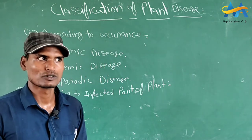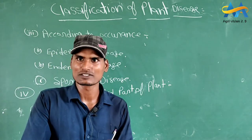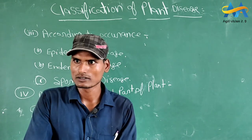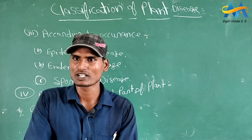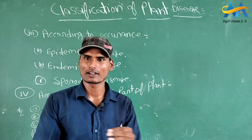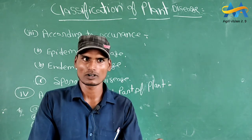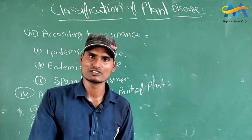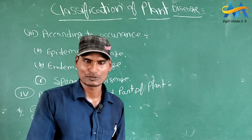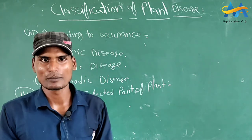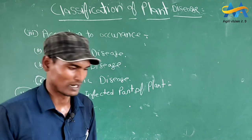And next is sporadic disease - जब किसी फसल पे थोड़ा इधर, थोड़ा उधर, छिटपुट के रूप में एकांत्रित एक किनारे से नहीं, बल्कि थोड़ा इधर थोड़ा उधर करके पूरे खेत में disease पाए जाएं, तो उसे कहते हैं sporadic disease। जिसका example है green ear disease of bajra।